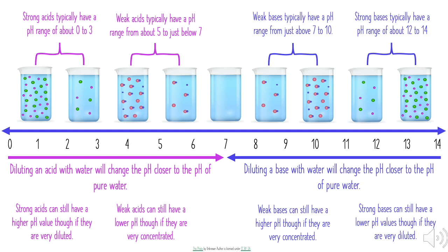By diluting and concentrating these acids and bases, we can adjust their pH values. However, if you start with a strong acid and keep diluting it, you'll eventually reach a point where the pH stops changing. The same is true for a strong base — continually diluting it will eventually produce something that looks like water. The point at which you can no longer change the pH is the neutral point at 7.